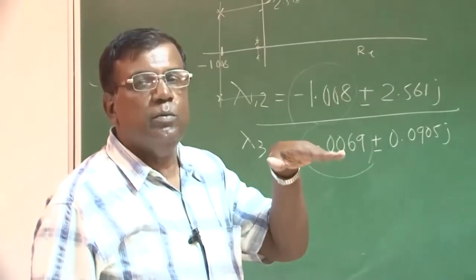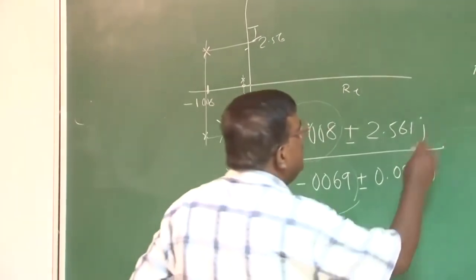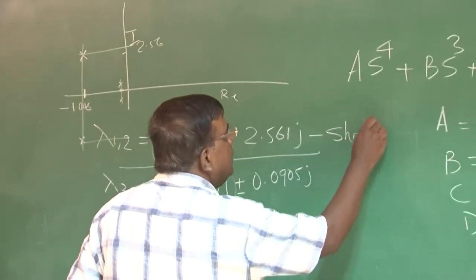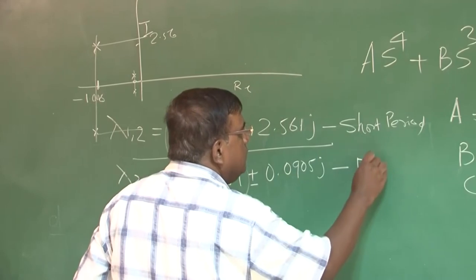For short period, the real root has to be relatively large negative. So this belongs to short period. And this belongs to fugoid.